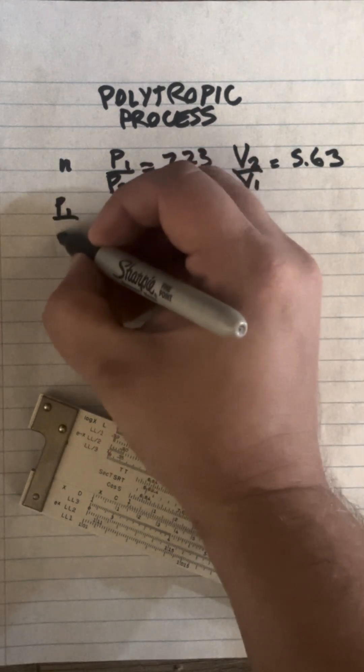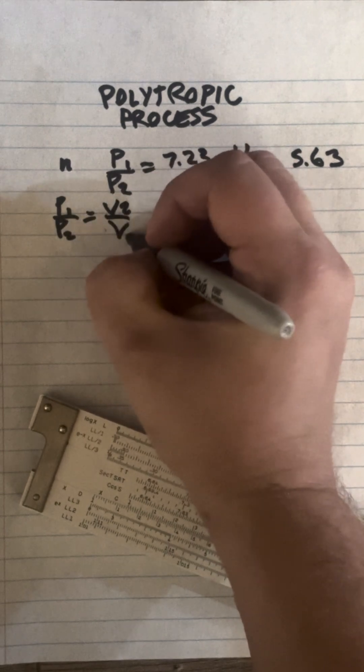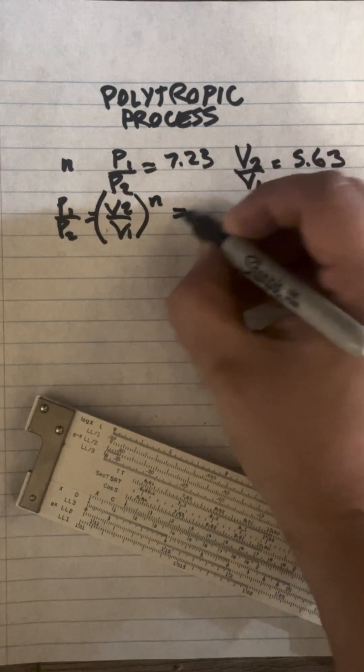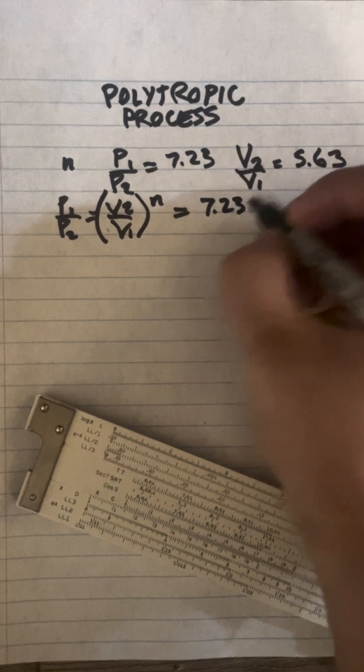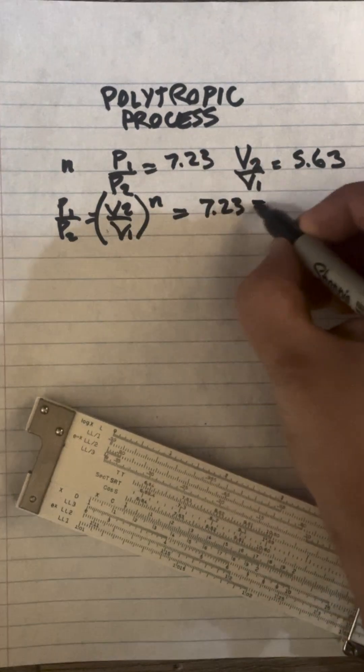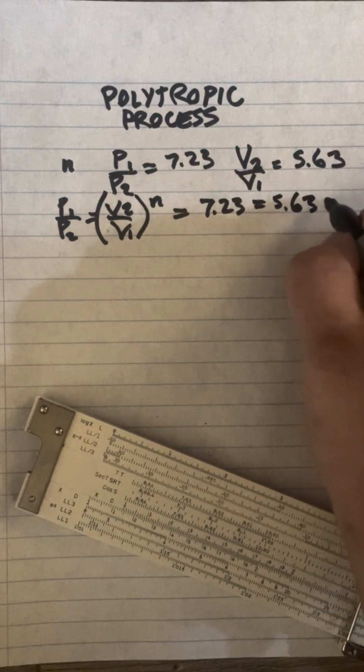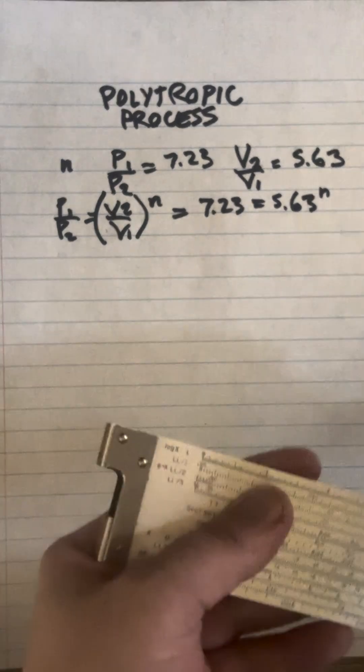The way we'll write that out is p1 over p2 equals v2 over v1 to the power of n. That's 7.23 equals 5.63 to the n. So if we want to get our slide rule out, we're going to go with 5.63 and try to find the log of that, which is n.